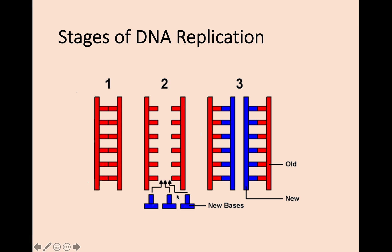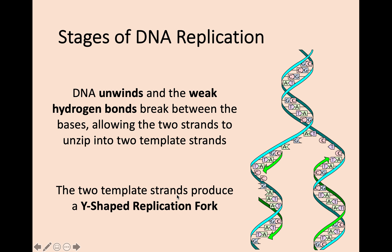Essentially, what happens in DNA replication is three stages. You start off with the original strand of DNA, we then split this, and the weak hydrogen bonds are going to break between them. New bases of DNA are added to each strand to make another strand. During the process of DNA replication, the DNA unwinds, and those weak hydrogen bonds break, allowing the two strands to unzip into two template strands — this is called a Y-shaped replication fork.